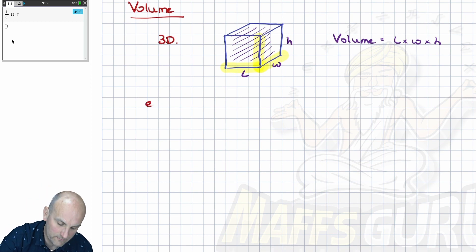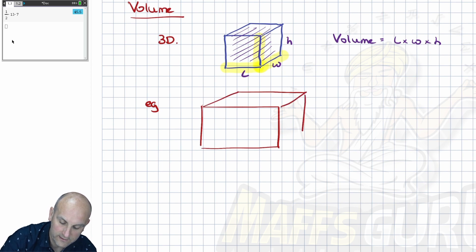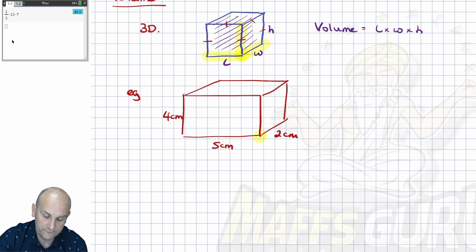So, if I have an example, then let's draw a cuboid. Now, the difference between a cube and a cuboid is basically a cuboid is rectangular. A cube is like a sugar cube. All the lengths are the same. So, if I now say, let that be four centimeters, five centimeters, and two centimeters, I am going to choose one corner.